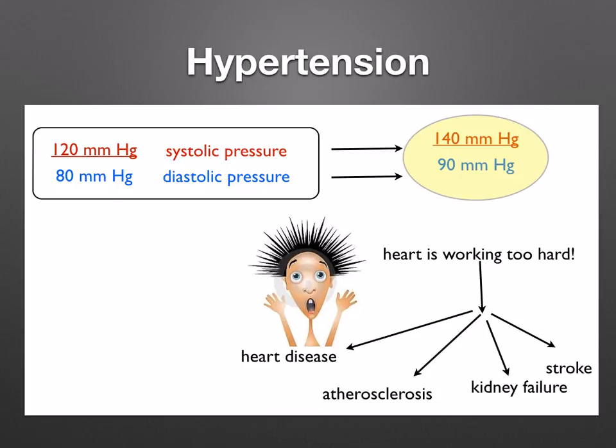Hypertension means the heart is working too hard, causing the heart muscles to weaken and unable to pump properly. It is a major risk factor associated with heart disease, as well as increasing the risk of atherosclerosis, strokes, and kidney failure. It is called the silent killer because the disease itself has no symptoms to warn of any forthcoming heart attack or stroke.